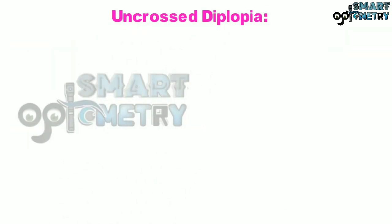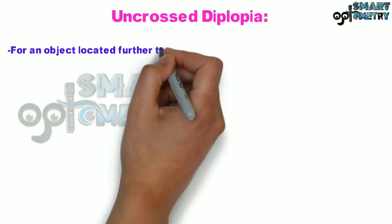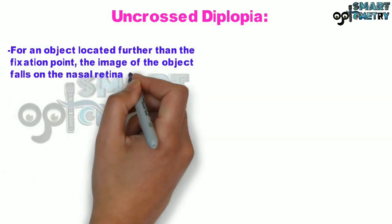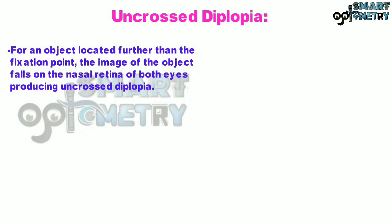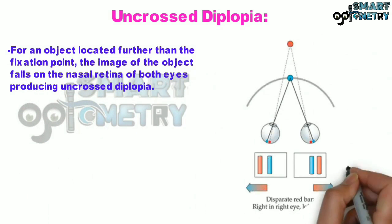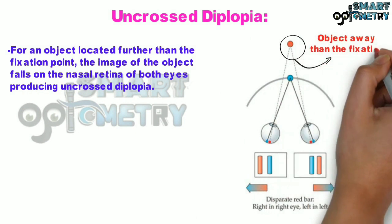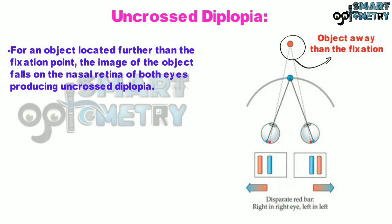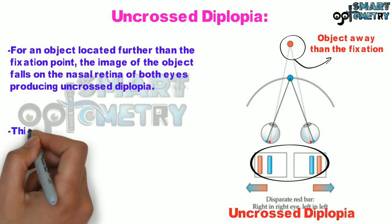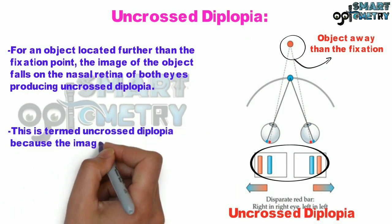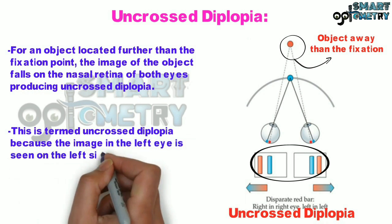For an object closer than the fixation point, crossed diplopia occurs as the image of the object falls on the temporal retina of both eyes. The object focused closer than the fixation point gives crossed diplopia because the image in the left eye is seen on the right side and vice versa. For an object located further than the fixation point, the image falls on the nasal retina of both eyes, producing uncrossed diplopia, where the image in the left eye is seen on the left side.